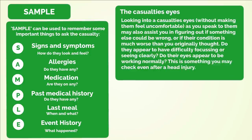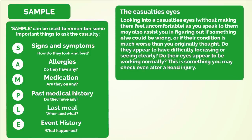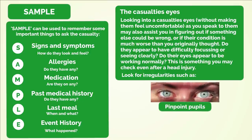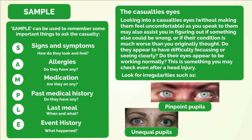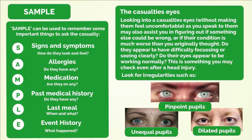The casualty's eyes: looking into a casualty's eyes as you speak to them may assist you in figuring out if something else could be wrong or if their condition is much worse than originally thought. Do they appear to have difficulty focusing or seeing clearly? Do their eyes appear to be working normally? This is something you may check even after a head injury — look for irregularities such as pinpoint pupils, unequal pupils, or dilated pupils.